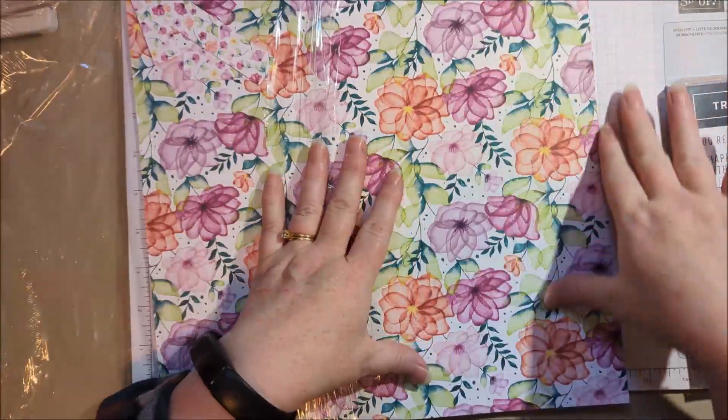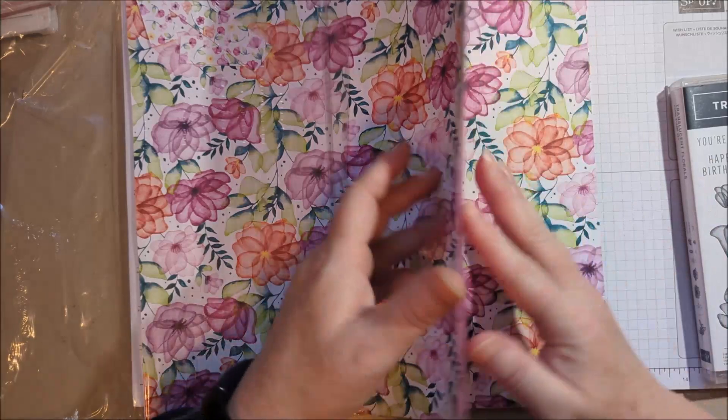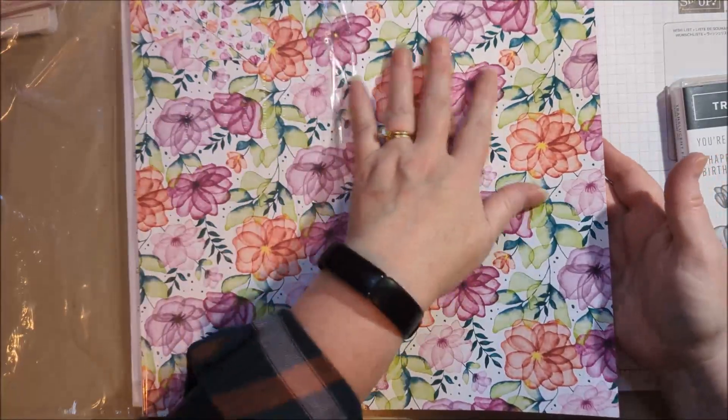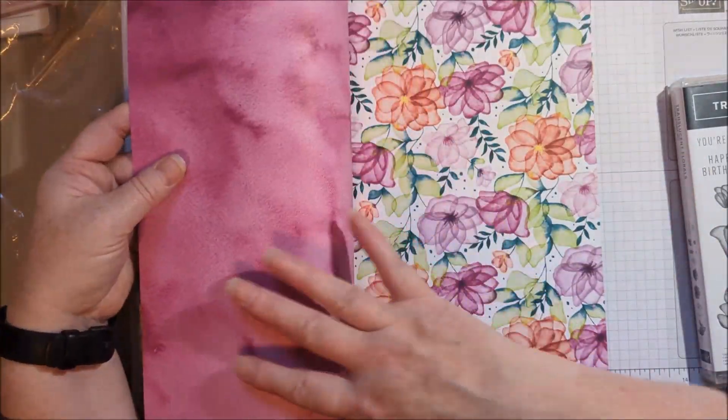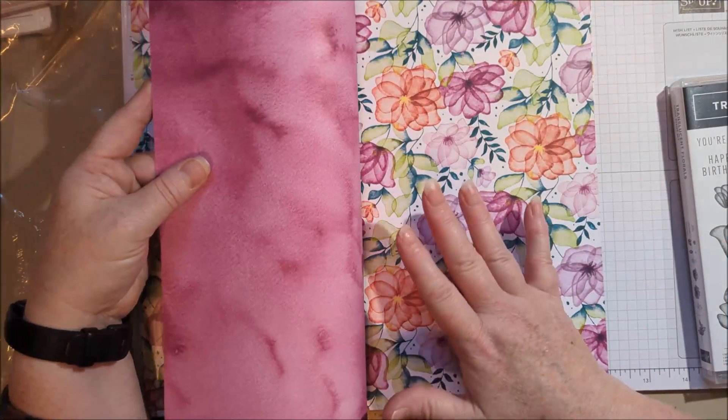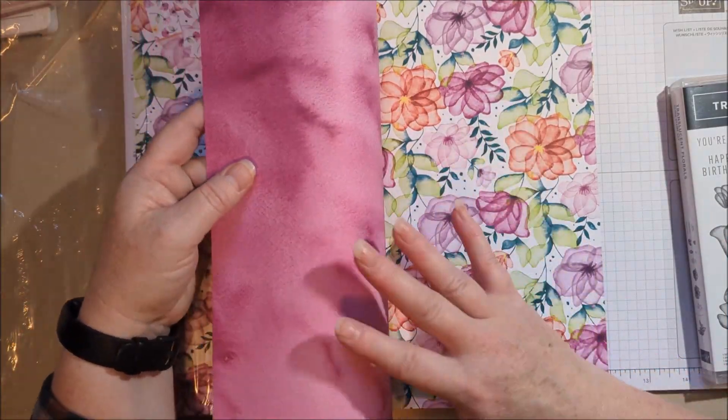So it's just this gorgeous paper and I wanted to share it because you might miss it. One side is patterned and then the back side is a watercolor wash in beautiful colors and this is going to be great with the dies.